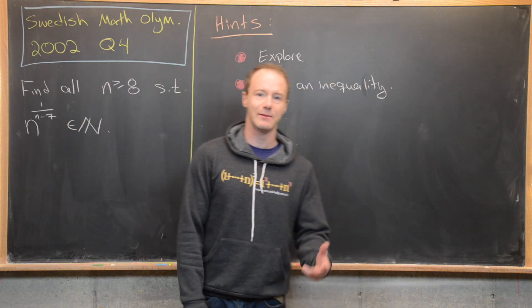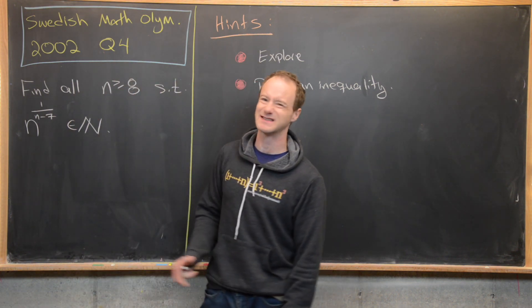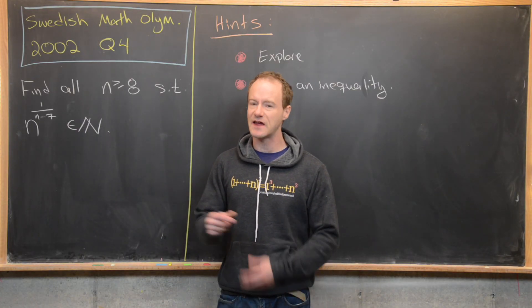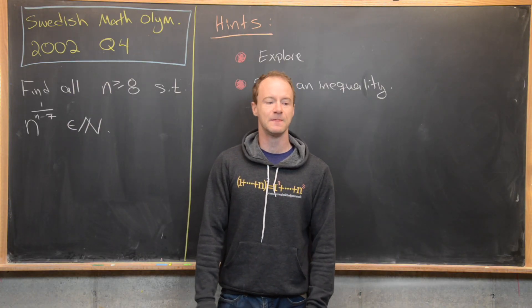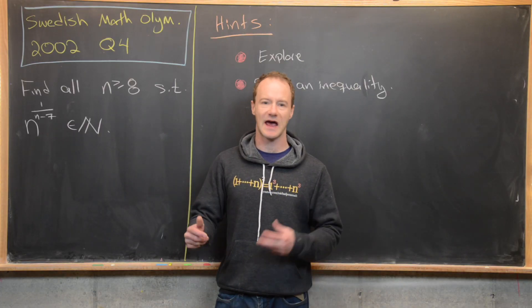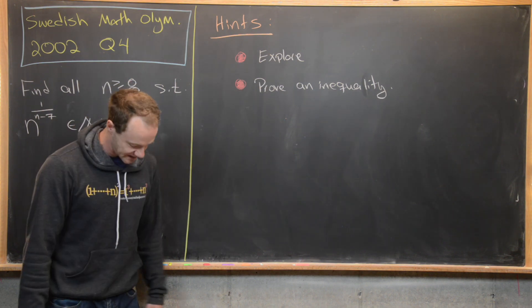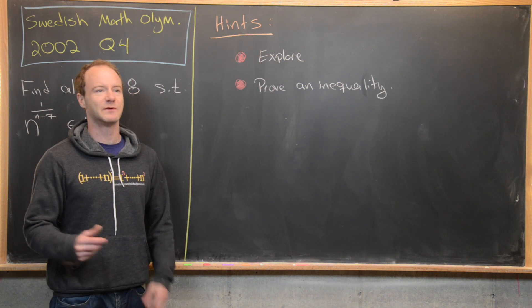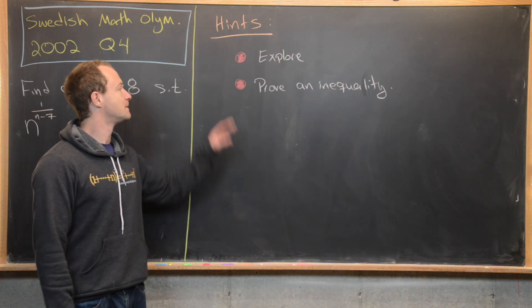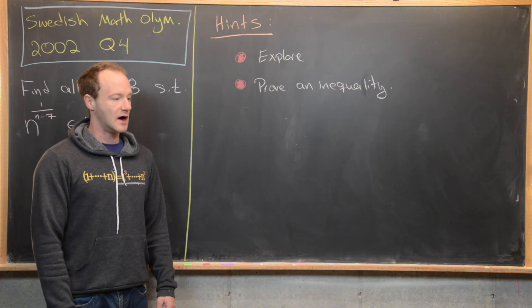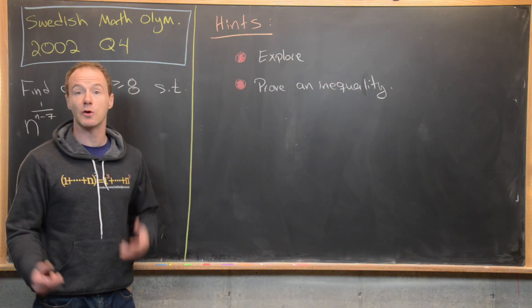Before we look at a solution, here are a couple of hints. With problems like this — finding all natural numbers satisfying some condition — there are probably four or fewer solutions. You want to find a couple of small ones, then see what goes wrong for large ones. Hint one: explore. Hint two: prove an inequality built from your exploration, which will confirm you have all the solutions.